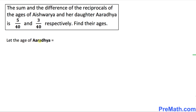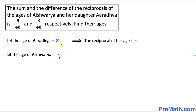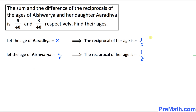The very first thing we are going to do is let the age of Aradhyaya, the daughter, be X years, and the age of Ashria be Y years. Then the reciprocal of Aradhyaya's age is 1/X, and the reciprocal of Ashria's age is 1/Y.